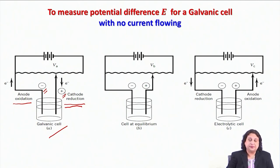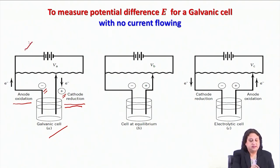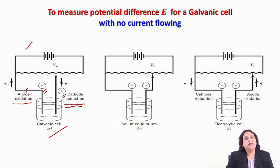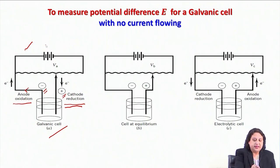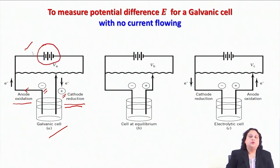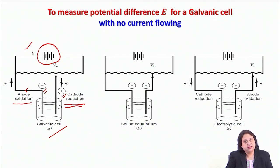Therefore, if I connect them through an external circuit, the excess electrons will be driven through the circuit such that in the long run the cell will discharge. Now, if I consider applying an external potential to balance the potential difference between the two electrodes, there may be many different situations.